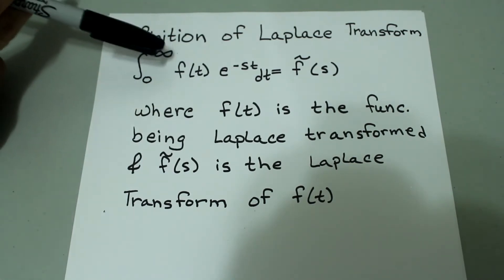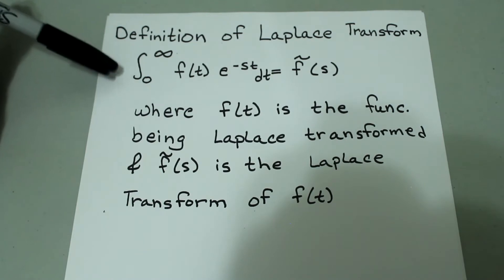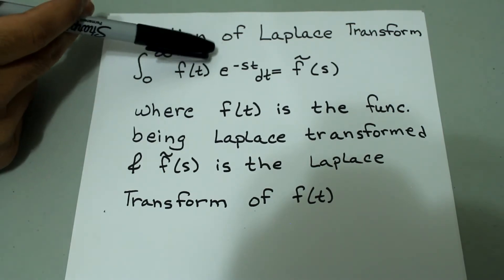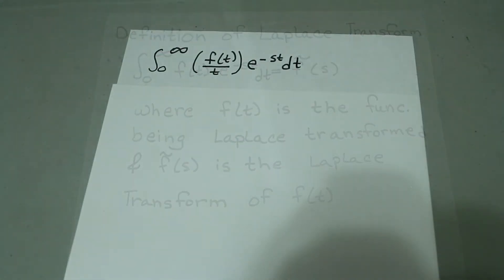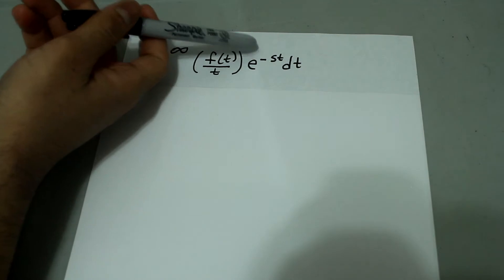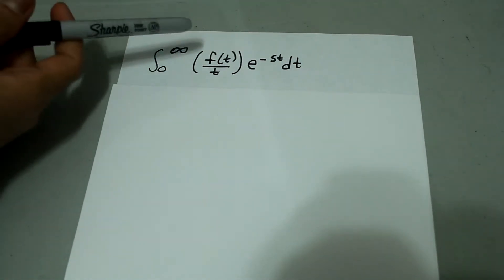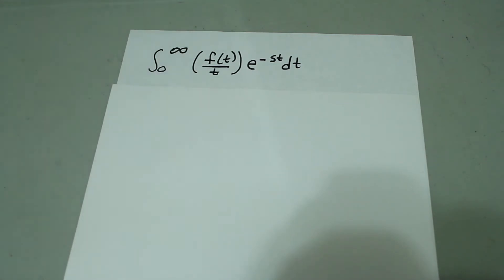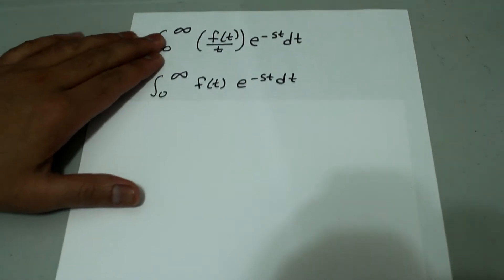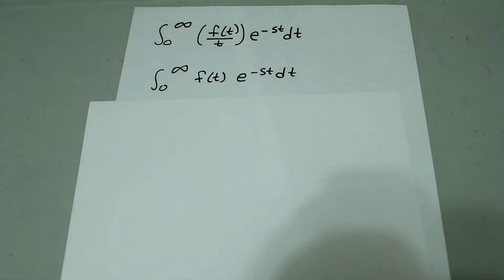Notice that whatever function is being Laplace transformed is just multiplied by e to the negative st. Since whatever is being Laplace transformed is multiplied by e to the negative st, then the Laplace transform of f of t over t would look like this.